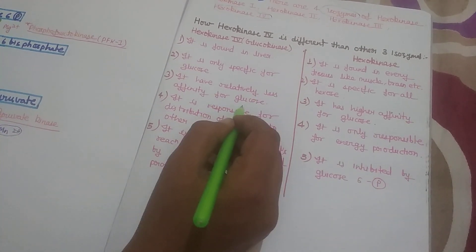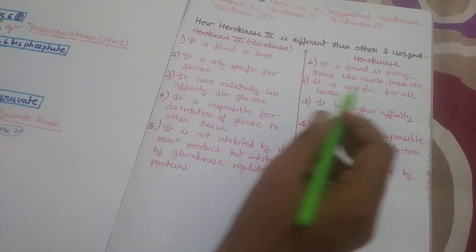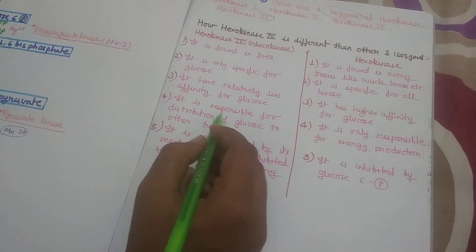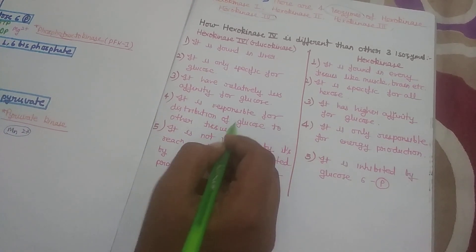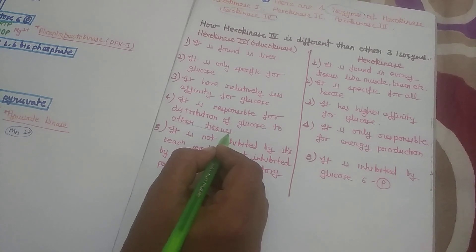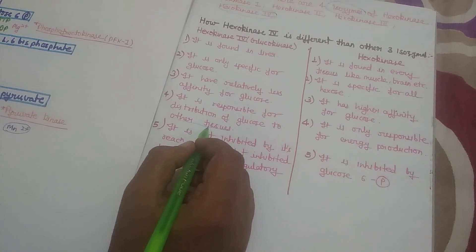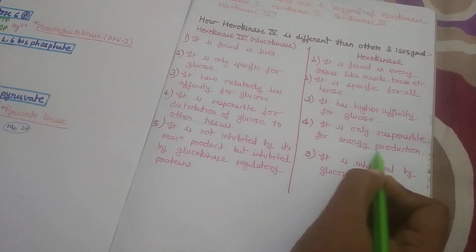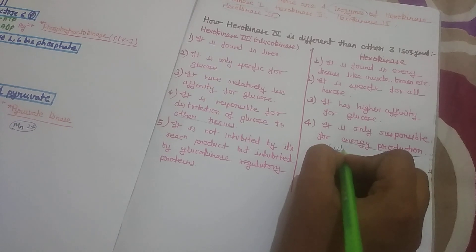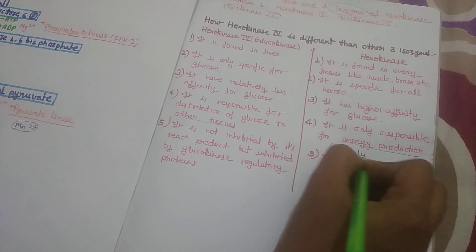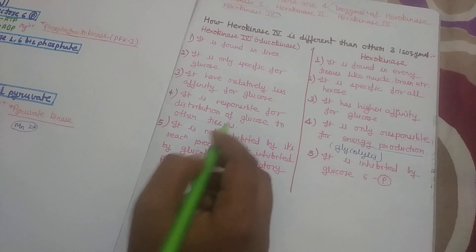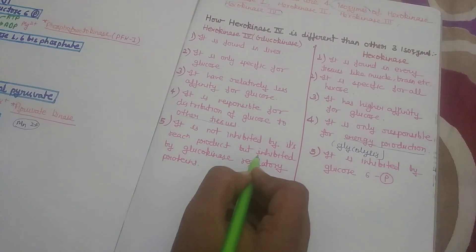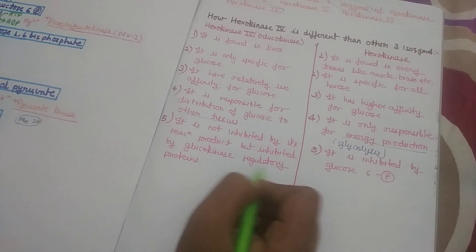Hexokinase 4 (Glucokinase) has less affinity for glucose while regular Hexokinase has more affinity for glucose. Glucokinase is responsible for energy production and glucose distribution in liver, whereas regular Hexokinase is responsible only for energy production, meaning it is responsible only for glycolysis. Importantly, Glucokinase is not inhibited by its reaction product, but is inhibited by Glucokinase Regulatory Protein.